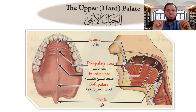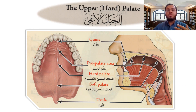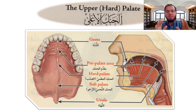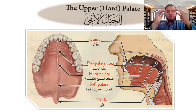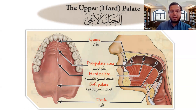One of the important parts inside your mouth is the upper palate — hard and soft. How to understand this from the pictures in front of you? The upper palate, or upper hard palate and soft palate, is divided into this part.